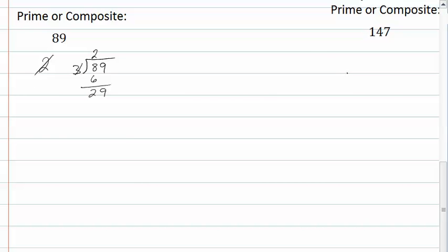If it's not divisible by 2, it won't be divisible by 4. Not divisible by 5 because it doesn't end in a 5 or a 0. Let's try 7.